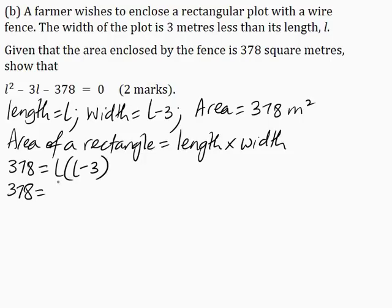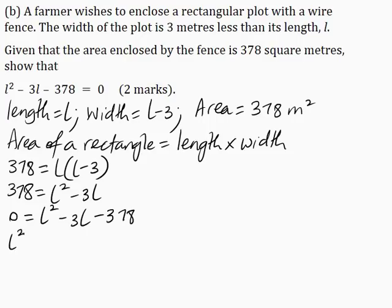Expanding this bracket by the distributive law gives L squared minus 3L. Taking 378 to the right hand side, 0 is equal to L squared minus 3L minus 378. Switching this equation around: L squared minus 3L minus 378 is equal to 0.